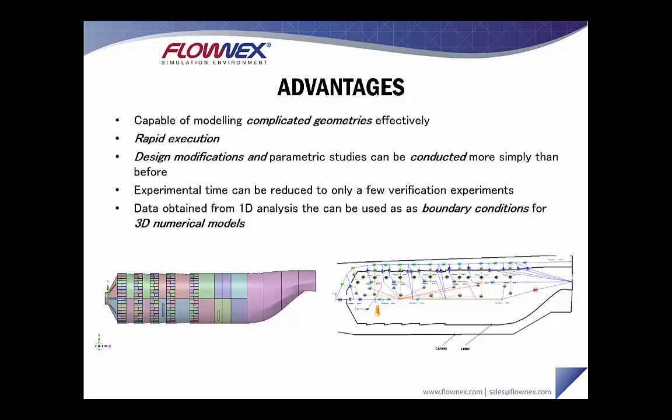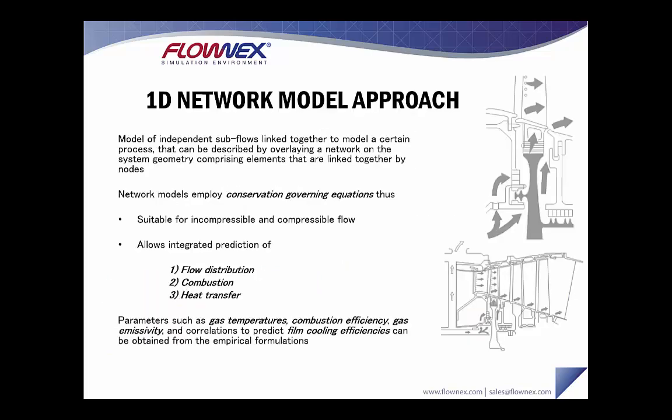Some of the advantages of a one-dimensional network model are that it's capable of modeling complicated geometries effectively. Its execution is rapid, typically only a couple of seconds for large models. Design modifications and parametric studies can be conducted more simply, and experimental time can be reduced to only a few verification experiments. Also very importantly, data obtained from this type of analysis can be used as boundary conditions for 3D numerical models. Network models like Flownex employ conservation and governing equations, suitable for incompressible and compressible flows, and allow the integrated prediction of flow distribution, combustion, and heat transfer.